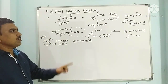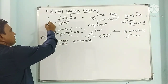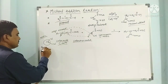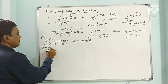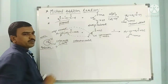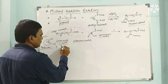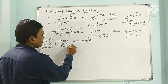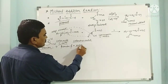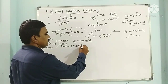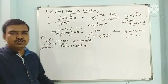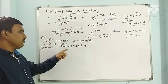Now we have to see the mechanism of this reaction. In this mechanism there are two steps. Step 1 is the formation of an enolate ion. In step 2, the enolate ion attacks nucleophilically.